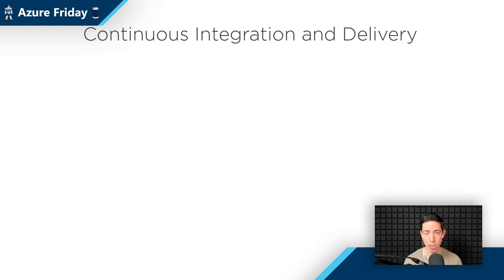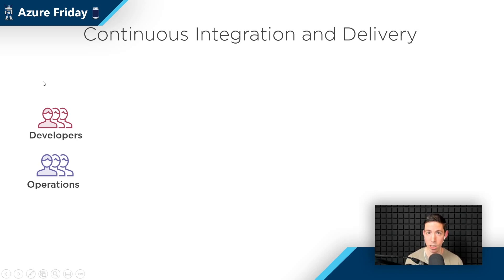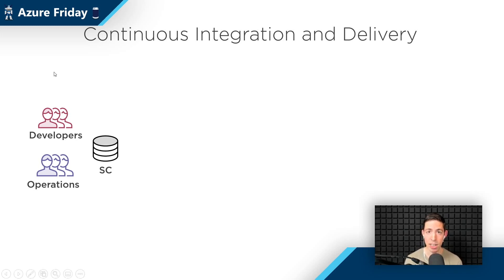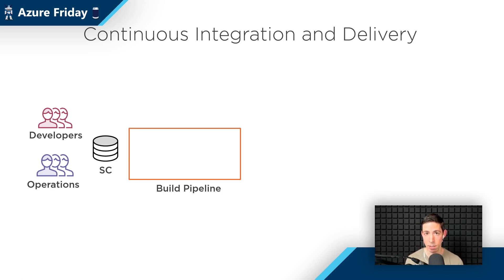So before we dive into the services you can use to deploy your application to Azure, let me share some context of what we're actually talking about — and that is continuous integration and continuous delivery. Within continuous integration, you have developers and also operations people, hopefully working together in a DevOps way. Developers make code for applications, and operations people make infrastructure as code or ARM templates. They then check that into source control, which could be GitHub or Azure Repos, and when they do that — hopefully on a regular basis — the build pipeline activates.